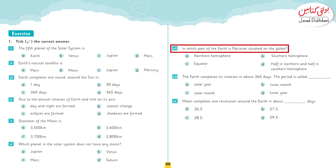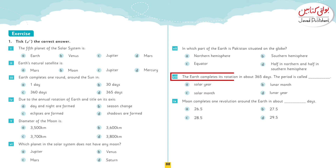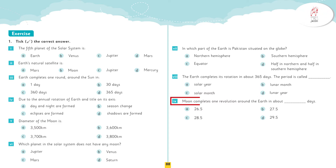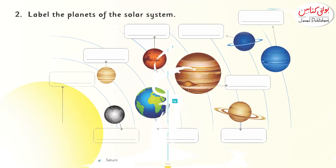In which part of the earth is Pakistan situated on a globe? Northern hemisphere, southern hemisphere, equator, or half in northern and half in southern hemisphere? The correct option is northern hemisphere. The earth completes its rotation in about 365 days — this period is called solar year, lunar month, solar month, or lunar year? Yes, it is solar year. The Moon completes one revolution around the earth in about — 26.5, 27.5, 28.5, or 29.5 days? The correct option is 29.5 days.